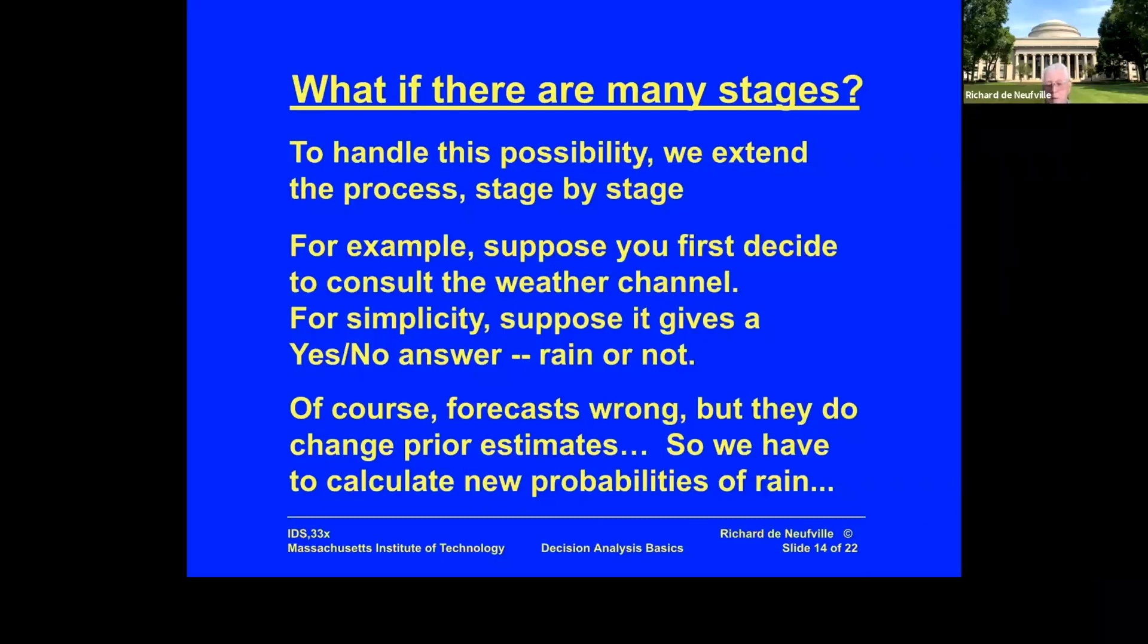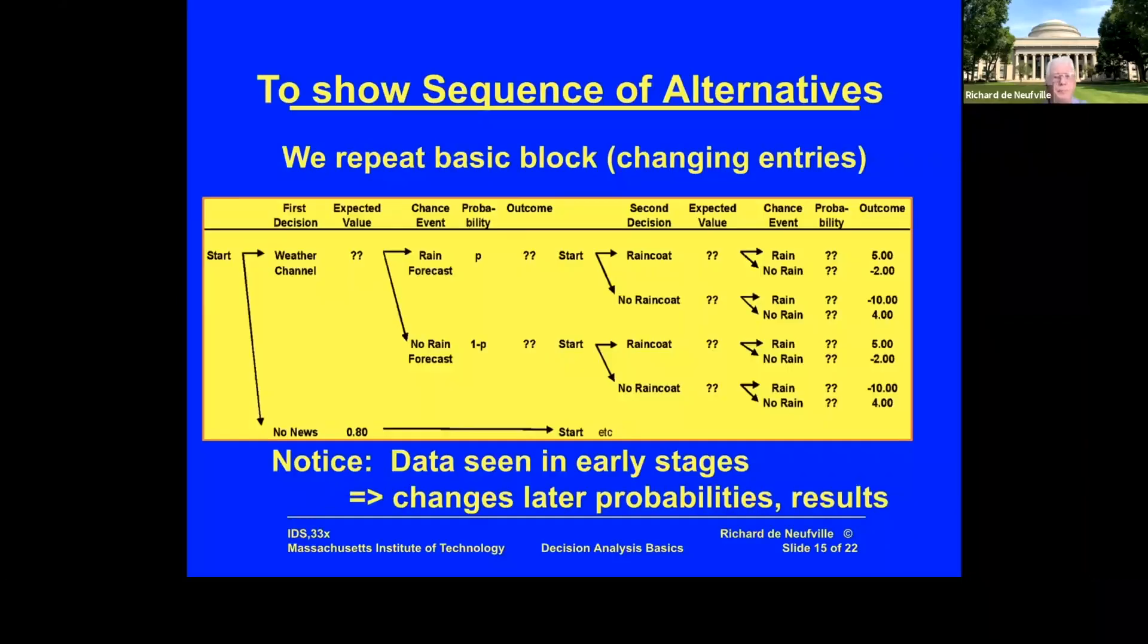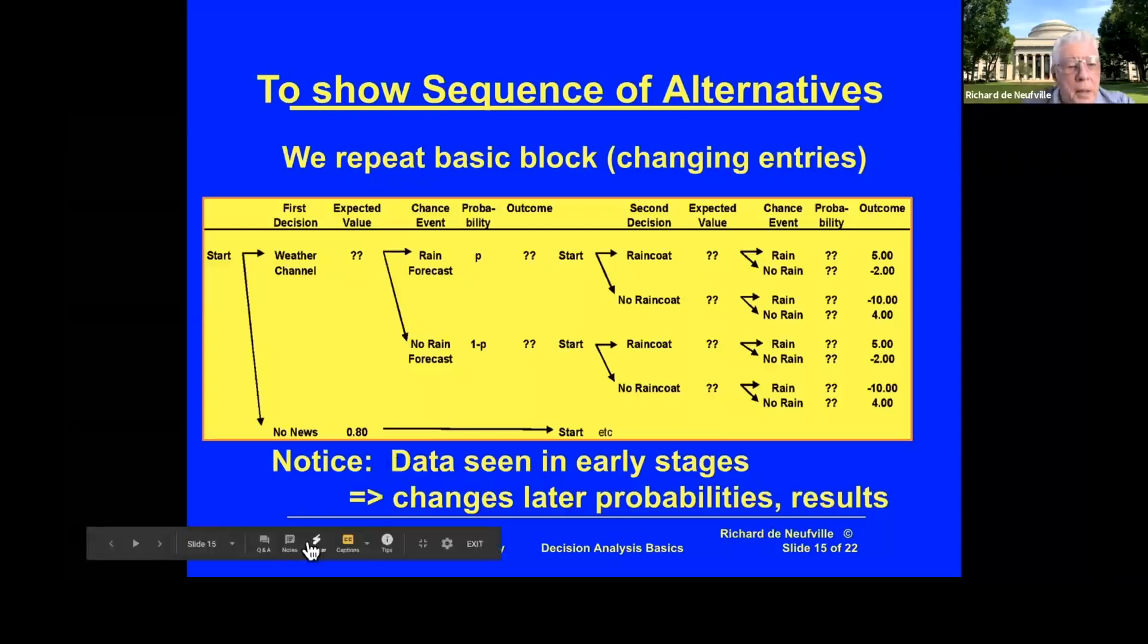Let me show you what this looks like. I've now set it up on a spreadsheet kind of basis here. Either I don't look at the weather channel and I have no news—so it was what I had before, my best choice at a value of 0.8.